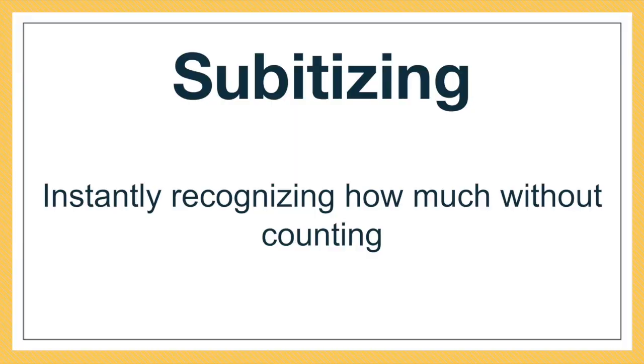Let me back up just for a second in case you are not familiar with subitizing. Subitizing is the ability to instantly recognize how much or how many without needing to count. So if I hold up three fingers, you don't have to count one, two, three — your brain just knows there's three. That's subitizing. We spend a ton of time in the early grades helping kids subitize small amounts with whole numbers.